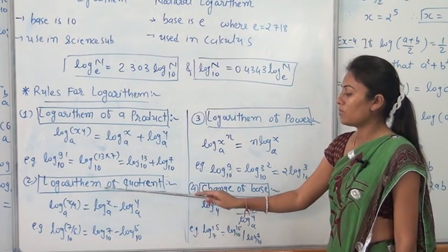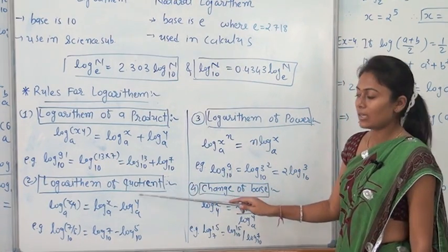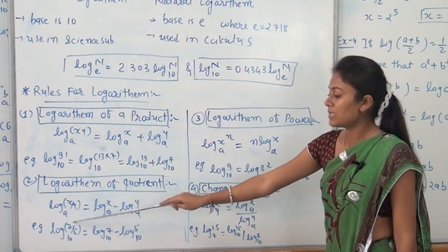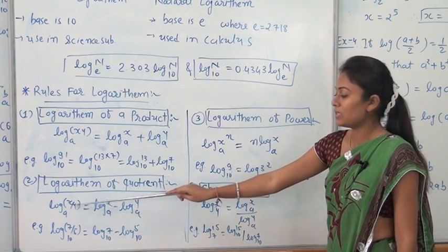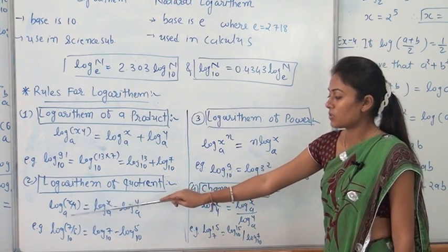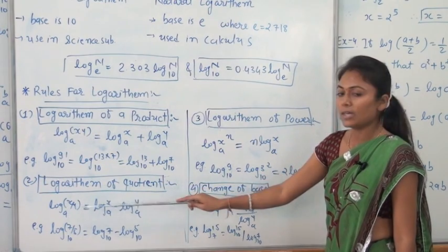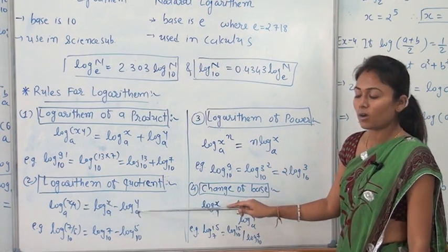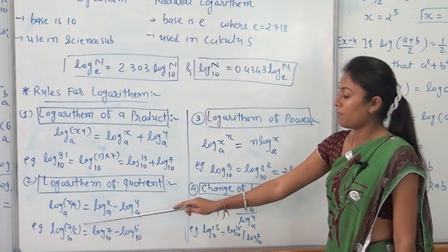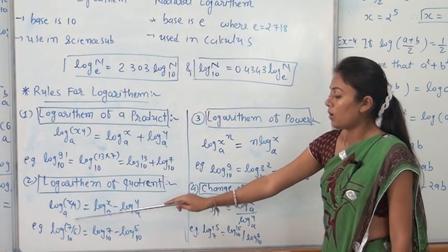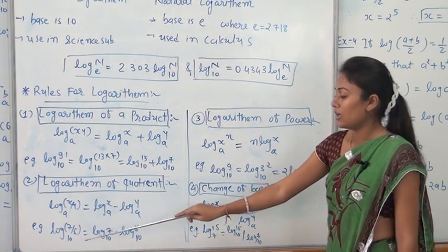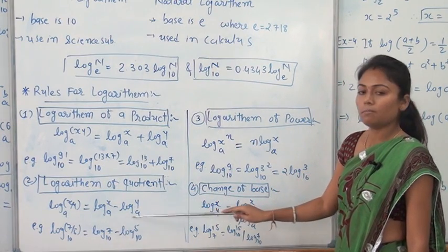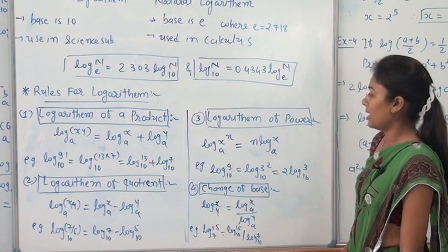The second rule is the logarithm of a quotient. Log x upon y base A equals log x base A minus log y base A, where x and y are two numbers in a quotient. For example, log 7 by 5 base 10 is equal to log 7 base 10 minus log 5 base 10.